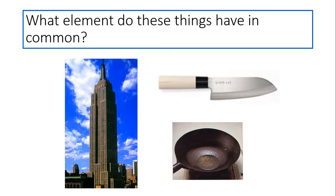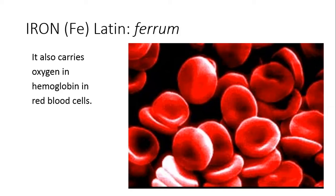What element do these things have in common? You see a skyscraper, a frying pan, and a knife. And the answer, iron. Iron is also in your red blood cells. It's in a part of your red blood cells called hemoglobin, and hemoglobin can grab onto oxygen, which all the cells in your bodies need for survival.